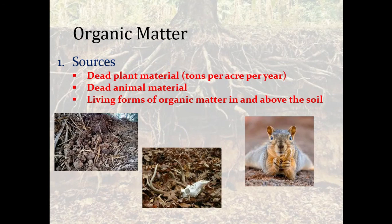Sources of organic matter include dead plant material — naturally cycling material — as well as dead animals. In a natural setting, think of carcasses and what comes to feed on them, but there is always some part left in the soil or from animal waste that is being broken down. There are also living forms of organic matter above the soil, such as plants.